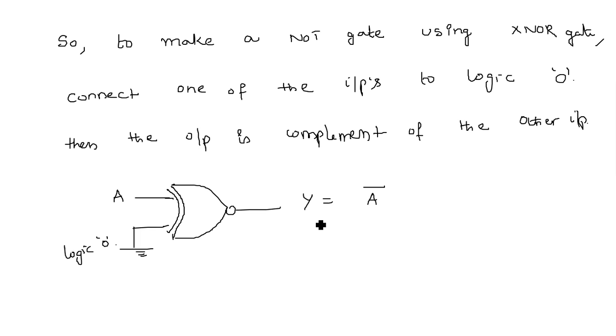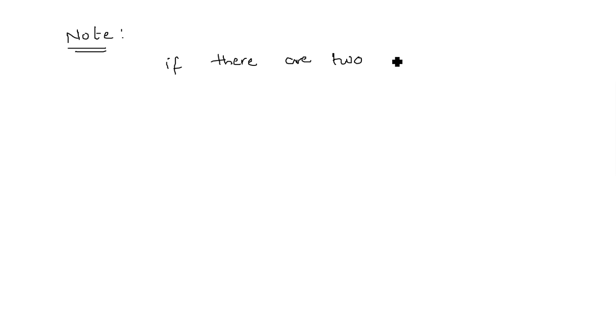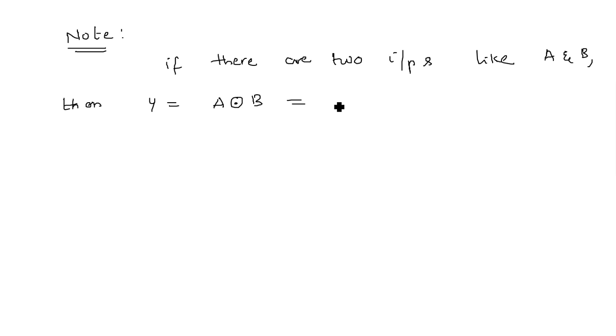Now one more important point: for two inputs A and B, Y = A XNOR B can be written as (A XOR B) complement. This is very important. However, for three inputs, A XNOR B XNOR C is NOT equal to (A XOR B XOR C) complement. Remember this — it is very important.